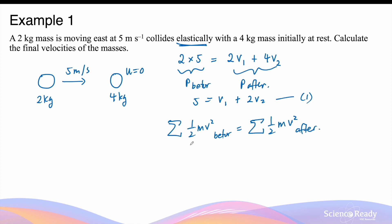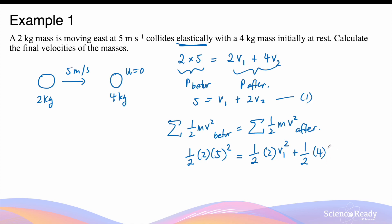The kinetic energy before the collision is given by the kinetic energy of the first object alone, as the second object was stationary. So it will be ½ × 2 kg × (5 m/s)². This equals the kinetic energy of the first object after the collision — mass still 2 kg, but now with v1² — plus the kinetic energy of the second object, 4 kg × v2². Simplifying by dividing both sides by ½ gives 50 = 2v1² + 4v2². Dividing both sides by 2 gives 25 = v1² + 2v2². Let's call this equation 2.